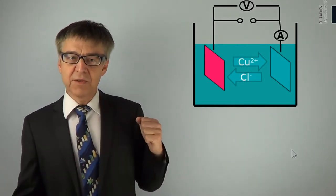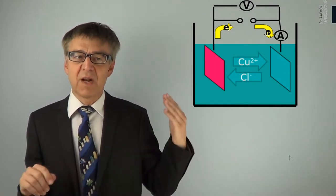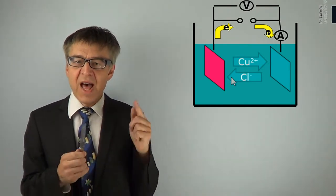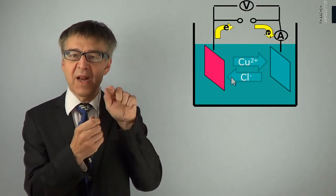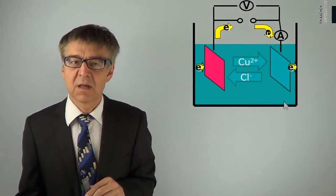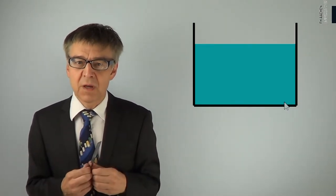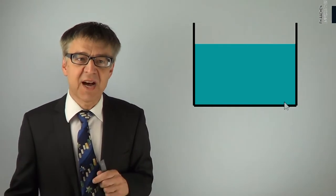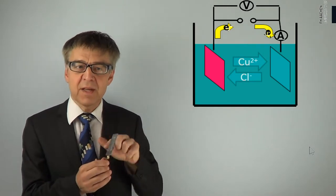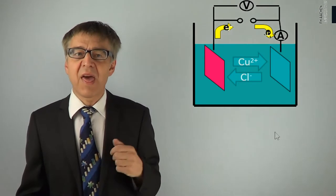In the external circuit, electrons flow – forced or voluntarily – from left to right. On the left-hand side, therefore, electrons must flow from the electrolyte into the metal. Such an electrode is called an anode. On the right-hand side electrode, electrons flow out of the metal into the electrolyte. This electrode is called the cathode.